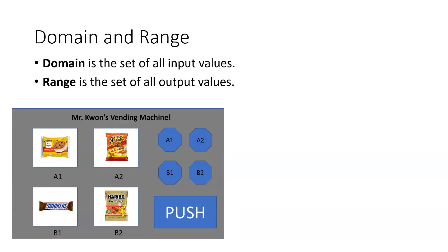Let's go ahead and refer back to my vending machine example. So the domain in this example would be the set of all input values, and the inputs were represented by the codes that you could push. So here, in this example, the domain is a1, a2, b1, and b2.